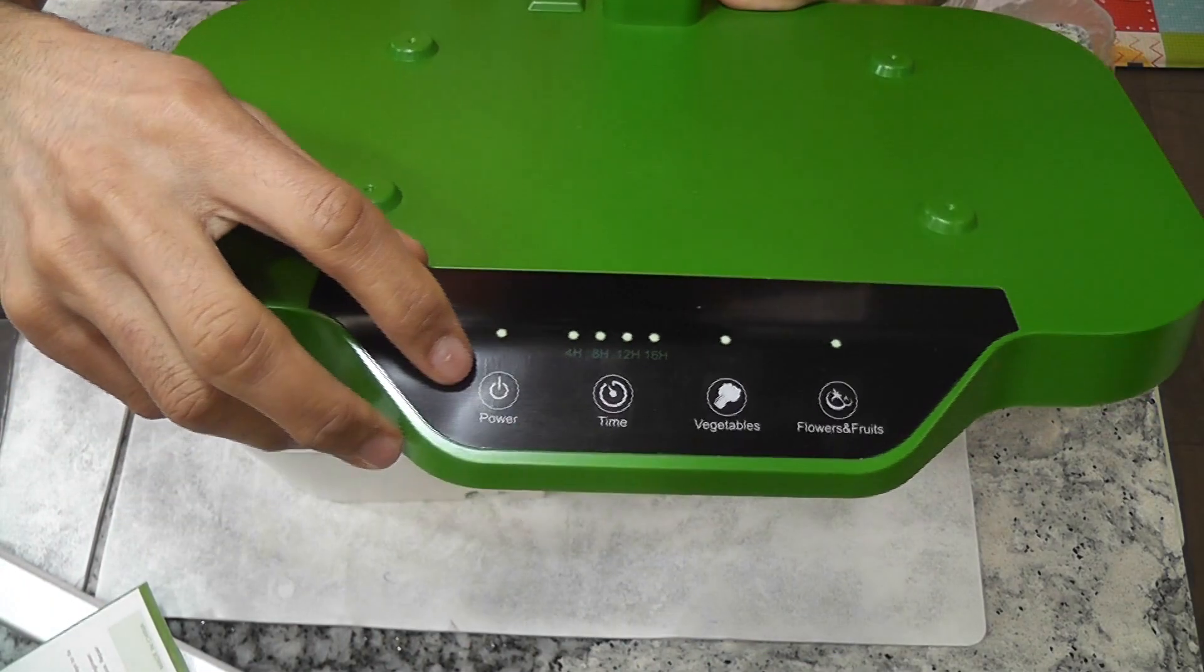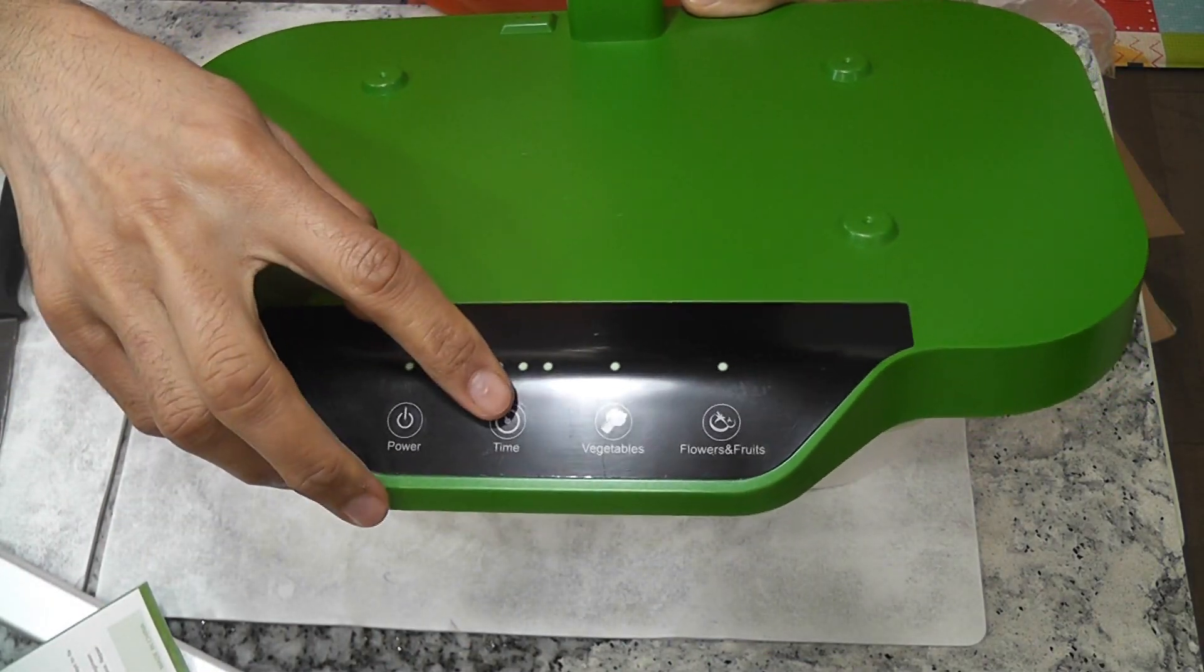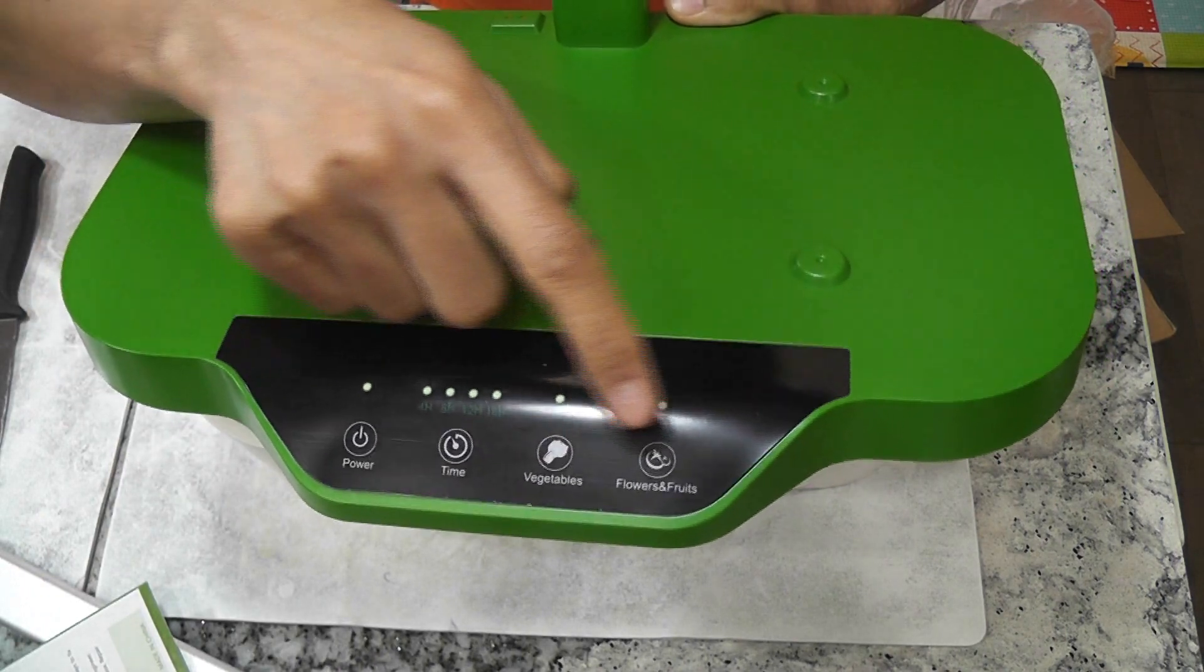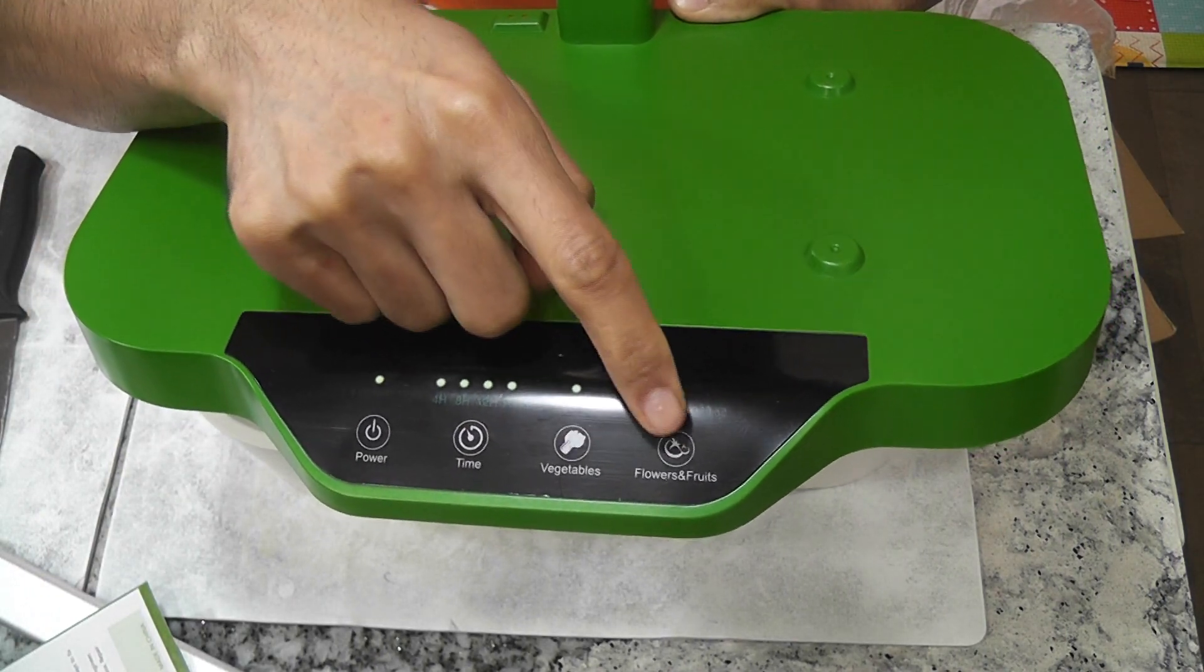Here is the base. It has four buttons: power, timer, and two grow modes. They are vegetables and fruits and flowers.